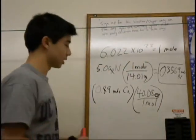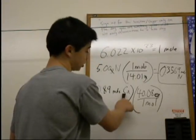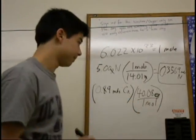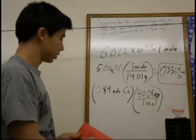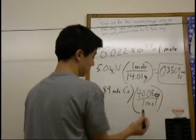which is 40.08 grams per one mole. This is saying that if we have one mole of calcium, we have 40.08 grams. And we're going to use that converter that we've got from the periodic table to convert the moles to grams.